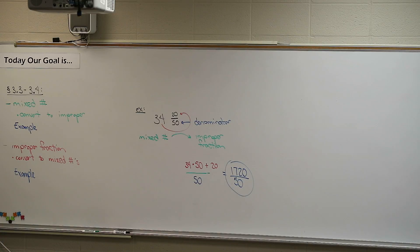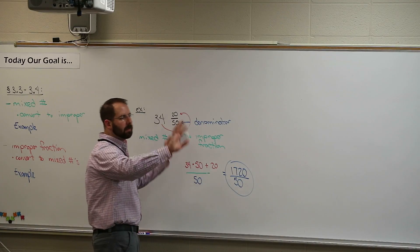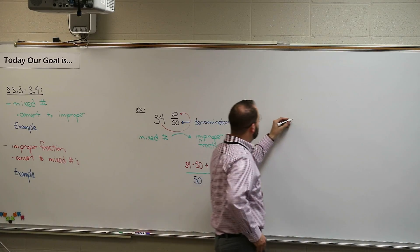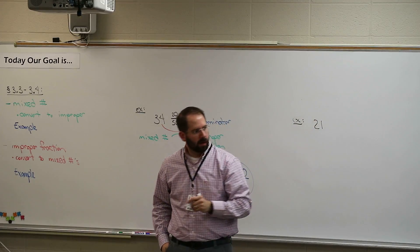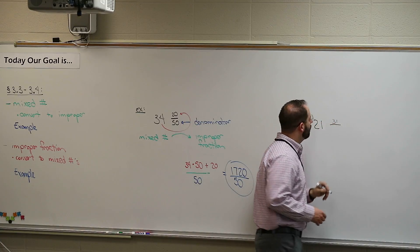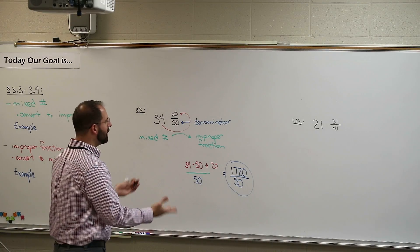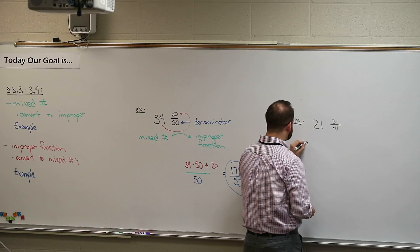That's the first set of problems — you're going to have 10 of those, and I think you can handle that. Let's do another one. Eric, pick any mixed number you like. He came up with 21 and 31 over 41 — lots of ones! That is a mixed number: a big whole number with a fraction. Again, we want to convert this mixed number to an improper fraction.